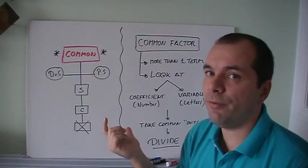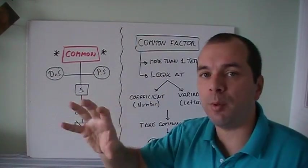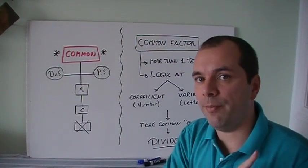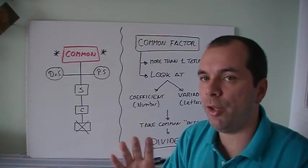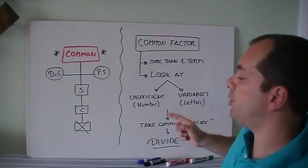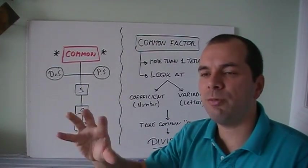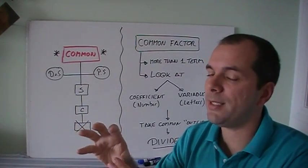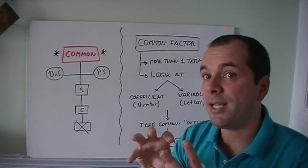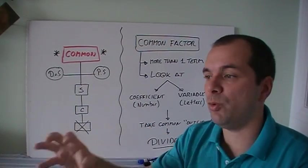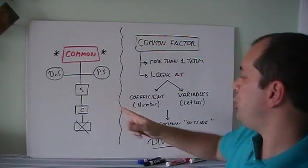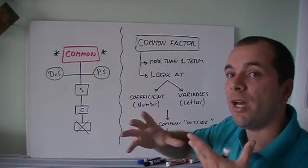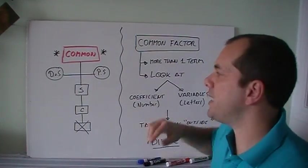And what is it that you look for to be common? You're going to look at the coefficient from all the terms and see if there's a number that goes into all of them. All of them. Not two out of three, just all of them. Then you look at the variables, or the letters, and you see if there's a letter that's repeated in all three terms and how many of them. If it's x squared, there's two x's, if it's x cubed, there's three x's, so two of them are common. What you do is you take out that common factor, and then you divide whatever you had from before by that common factor. Let's put an example. We'll do three examples so you can see what we're talking about.